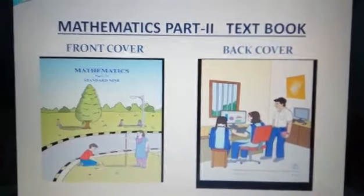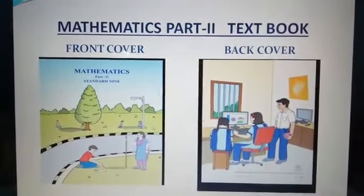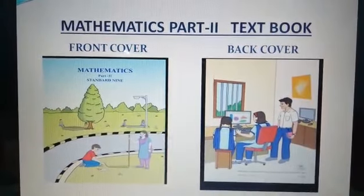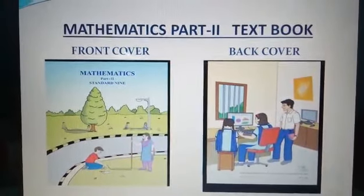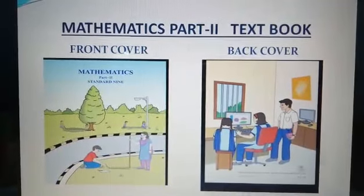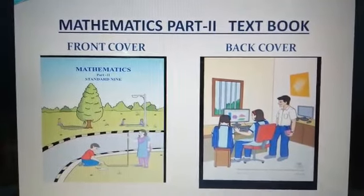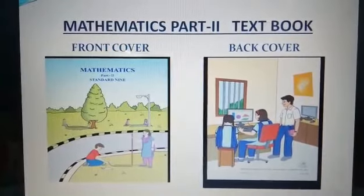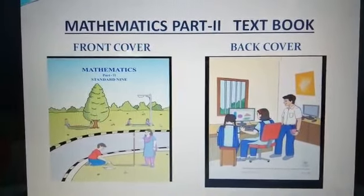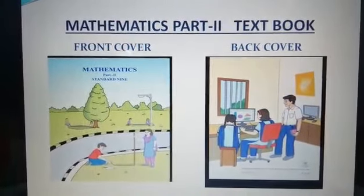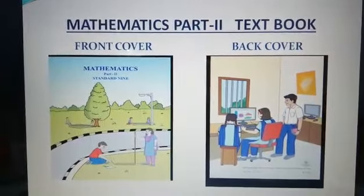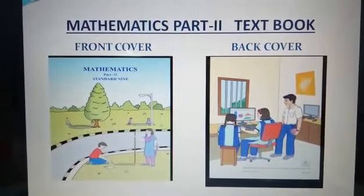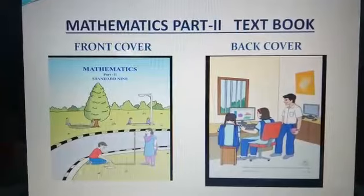Now, this is your Mathematics Part 2 textbook. The left image is the front cover and the right image is the back cover of your book. Up to 8th grade, you have verified the properties of lines, triangles, quadrilaterals, circles, etc. Now you are going to give logical proofs of these and some more properties. In this book also, different activities are given to understand different concepts.